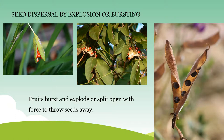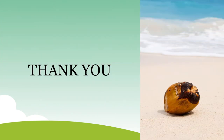In this way, seeds get dispersed with the help of different agents like wind, water, birds, animals, and even humans, to go away to a distant place from the parent plant — to avoid competition for food, water, and sunlight, and to get enough space for growth. Thank you, children. Hope you understood the concept well.